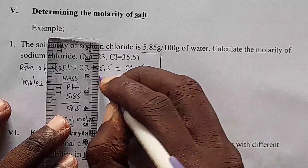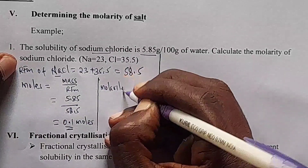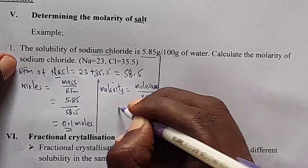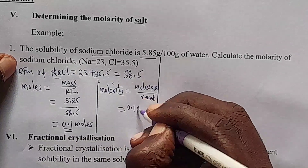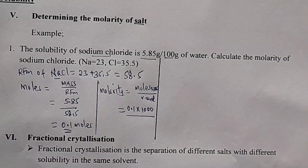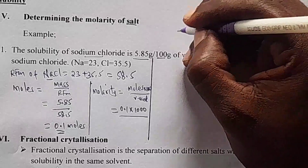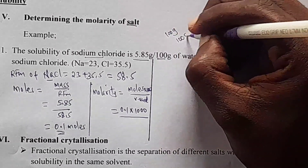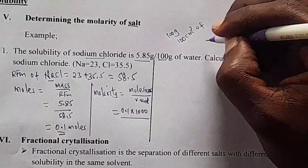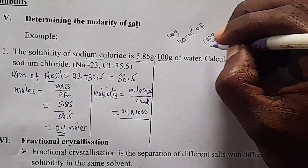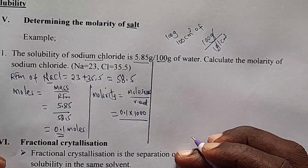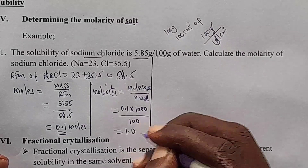Now, how do we calculate molarity? Molarity is given by moles times 1,000 over volume used. In our case, moles is 0.1 times 1,000 divided by the volume used. The volume here comes from 100 grams of water, which equals 100 cm³ of water, because the density of water is 1 gram per cm³. So dividing 100 grams by 1 g/cm³ gives 100 cm³. Therefore, molarity equals 0.1 × 1,000 ÷ 100 = 1.0 mol/L.